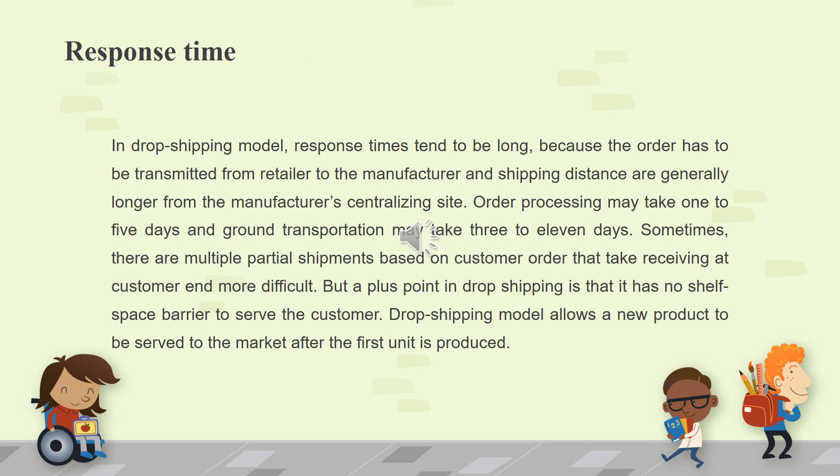In the drop shipping model, response times tend to be long because the order has to be transmitted from retailer to the manufacturer, and shipping distances are generally longer from the manufacturer's centralizing site. Order processing may take 1–5 days and ground transportation may take 3–11 days. Sometimes there are multiple partial shipments based on customer order, making receiving at the customer end more difficult. A plus point in drop shipping is that it has no shelf space barrier to serve the customer, and the model allows a new product to be served to the market after the first unit is produced.